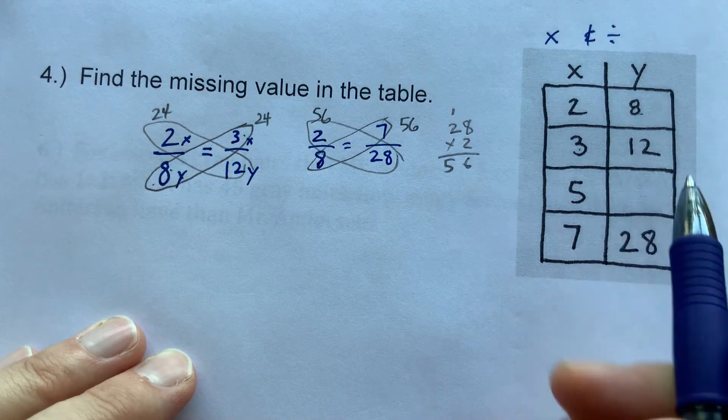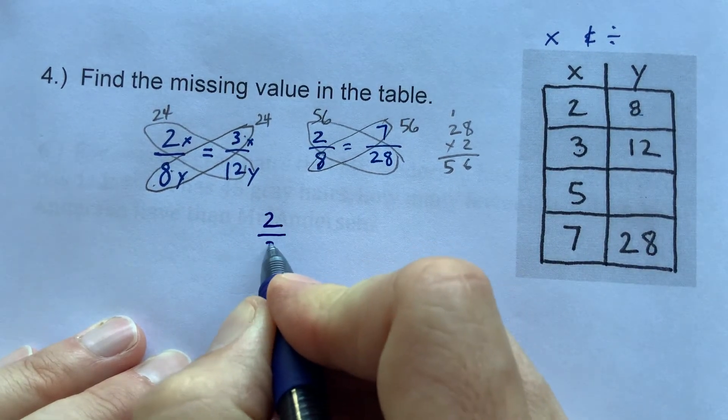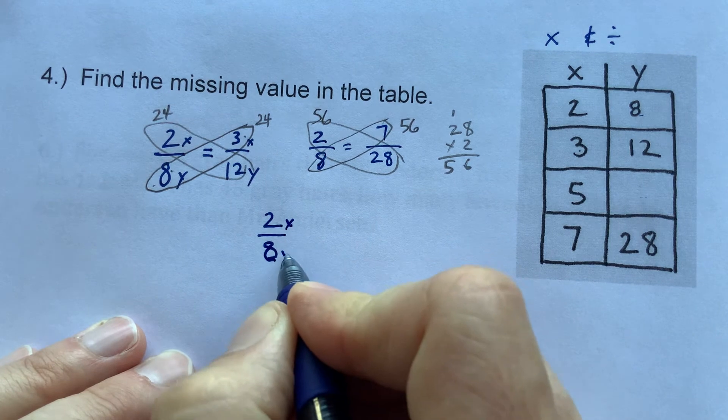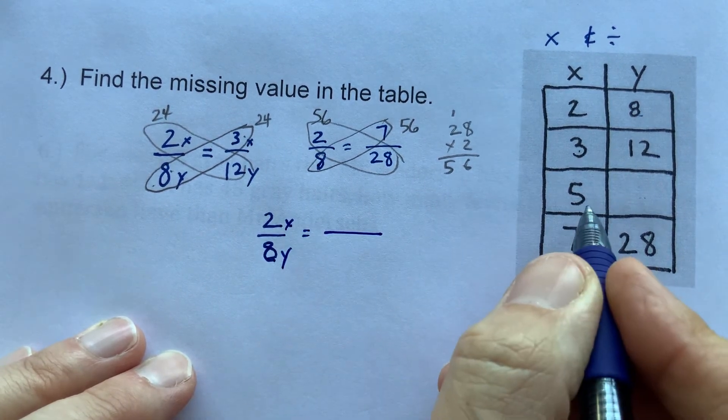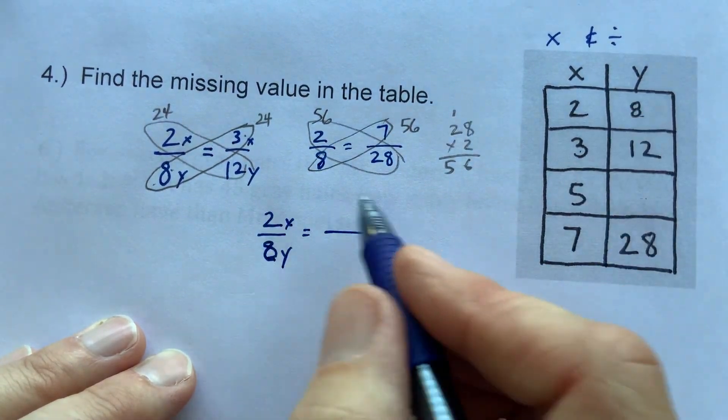Now we're going to try to find this missing y. 2 to 8 again. Remember, 2 is x, 8 is y. We have a 5. 5 is x. So where are we going to put 5? Are we going to put it on the top or the bottom?